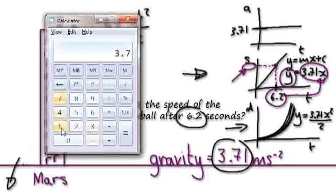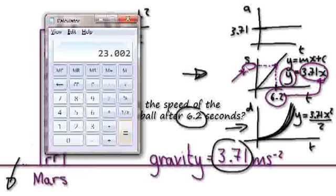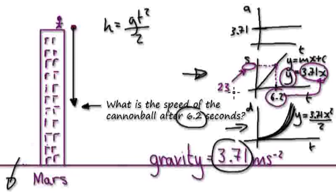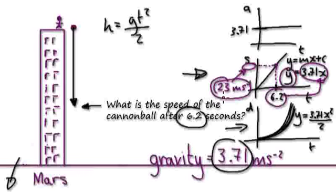3.71 times 6.2 equals — so the speed here would be roughly 23. Because we're talking about speed, it would be meters per second, or m·s⁻¹. So your answer is 23 meters per second.